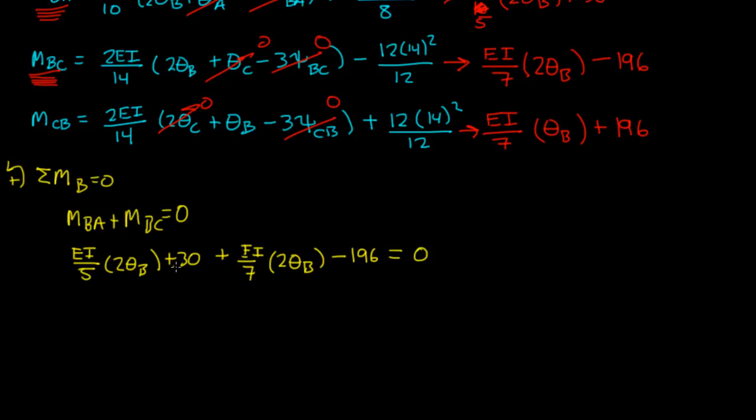So if we simplify this a little bit, we can actually bring 30 and negative 196 to the other side. EI over 5 times 2 theta B plus EI over 7 times 2 theta B, and that's equal to 196. 30 plus negative 196 is negative 166. You add that to both sides, you should get 166 on this side. Just checking, making sure our equation is right.